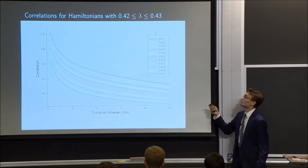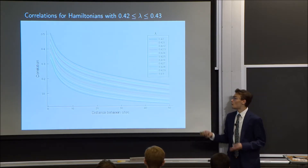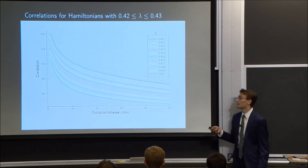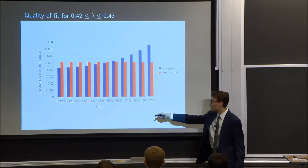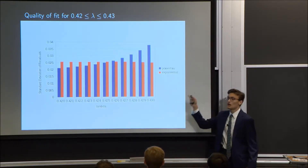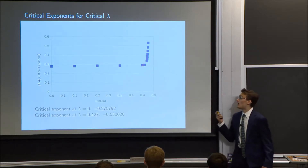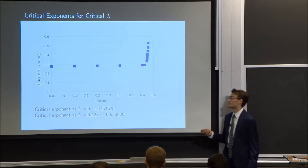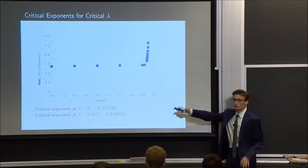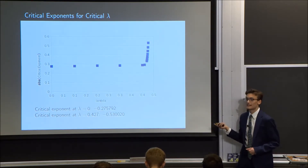Looking more precisely between lambda 0.42 and 0.43, we can no longer see a very pronounced change in the shape of the correlation function between any two consecutive values of lambda, making it far more difficult to discern exactly where the phase transition occurred. The bar graph shows that for lambda between 0.423 and 0.427, the quality of fit for the standard deviations of the residuals for power law and exponential fits are all within 10% of each other, making it unclear exactly where within that range the phase transition occurred. This is also supported by the critical exponents: from lambda 0 to about 0.42, the critical exponents remain about the same, but right around 0.423 to 0.427 they begin to show a drastic change, indicating that's where the phase transition occurs.